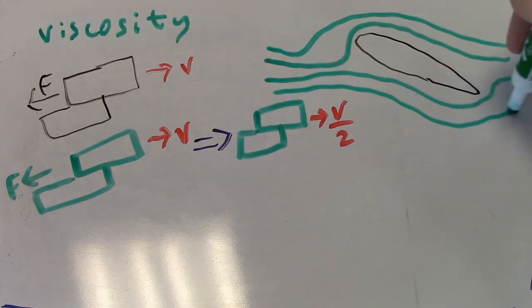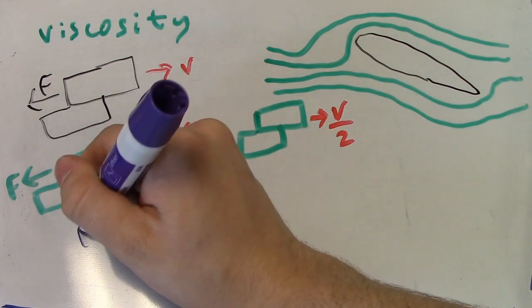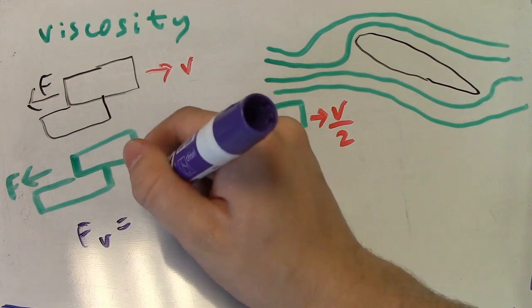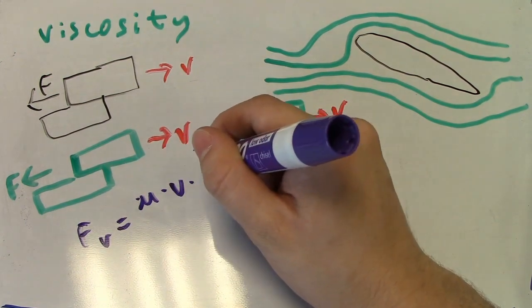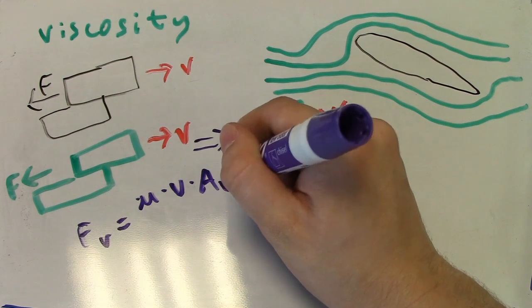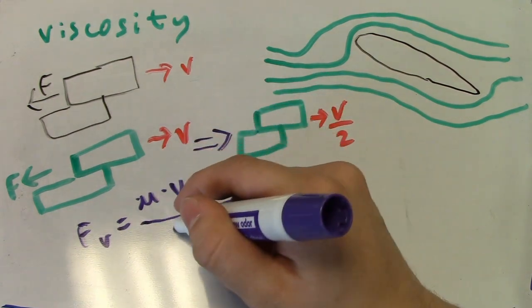We can calculate the force associated with viscosity from the equation force, F sub V, is equal to the viscosity, mu, times the velocity, V, times the area, A sub V, divided by the distance, Z.